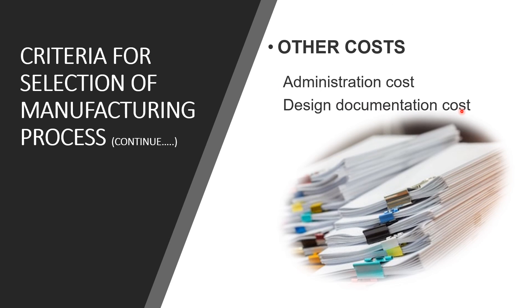Other costs like administration cost and design documentation cost also affect the process selection. Administration cost includes documentation cost along with all formal and informal paperwork. If a company wants to produce a product and some parts need to be manufactured outside the company, it requires extensive documentation related to the design of the parts. The cost of paperwork is less, but it does affect the final cost of the product.